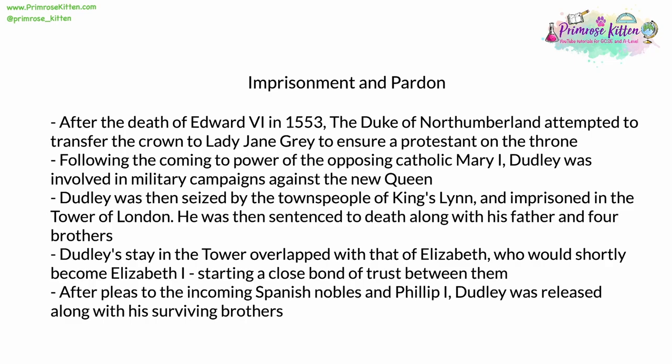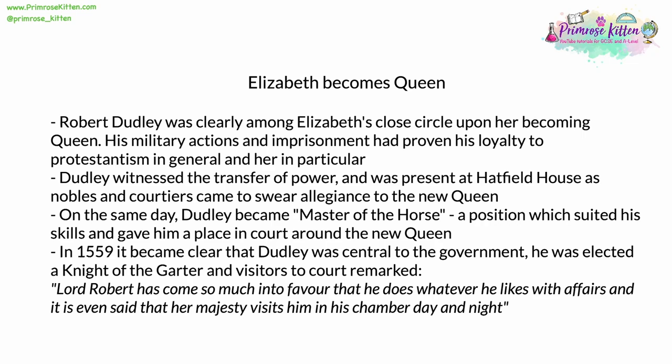Dudley's stay in the Tower of London overlapped to an extent with that of Elizabeth, who would become Elizabeth I. This started a close bond of shared trust between the two. After pleas to the incoming Spanish nobles and Philip himself, Dudley was eventually released, along with those brothers who had survived and not been executed. From a young age, therefore, Robert Dudley was clearly among Elizabeth's close circle, and his military actions in support of Protestantism and his imprisonment in the Tower had proven his loyalty to both Protestantism in general and her in particular.